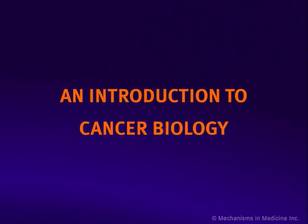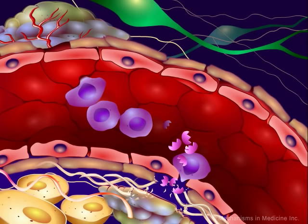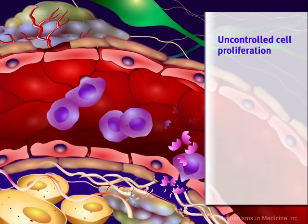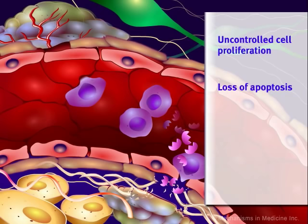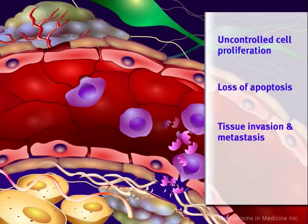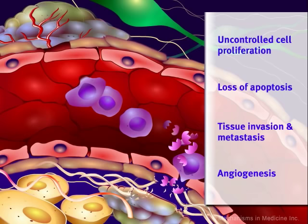An Introduction to Cancer Biology. In this presentation, we will discuss selected characteristics common to many cancers: abnormal signal transduction resulting in uncontrolled cell proliferation, loss of apoptosis or programmed cell death, tissue invasion and metastasis permitting spread of the cancer, and angiogenesis leading to enhanced blood supply of tumors.